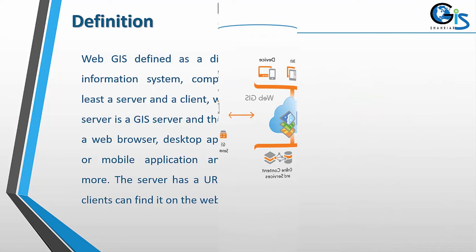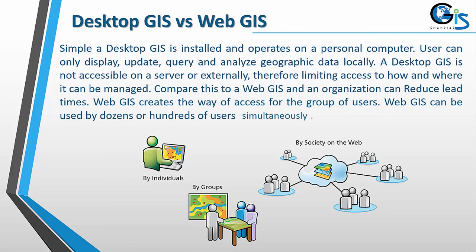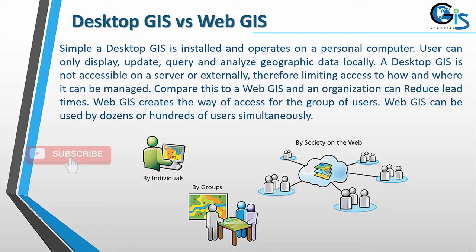Now let's see Desktop GIS versus Web GIS. A desktop GIS is installed and operates on a personal computer. Users can only display, update, query, and analyze geographic data locally. A desktop GIS is not accessible on a server or externally, therefore limiting access to how and where it can be managed. Compare this to Web GIS — an organization can reduce lead times. Web GIS creates a way of access for groups of users and can be used by dozens or hundreds of users simultaneously.